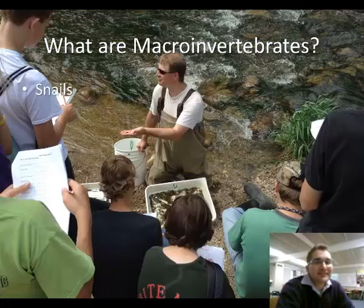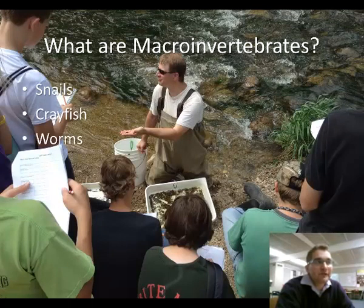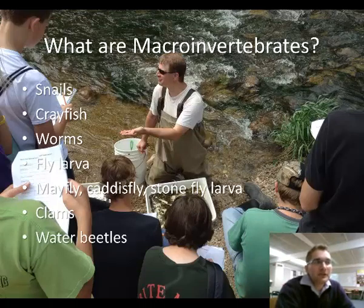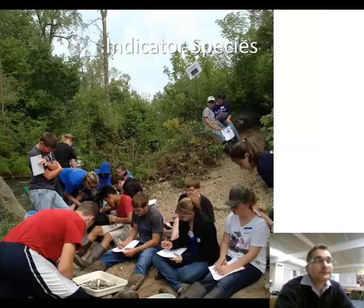Some examples that we will find in the stream are snails, crayfish, worms, fly larvae, mayfly, caddisfly, or stonefly larvae, clams, and water beetles.